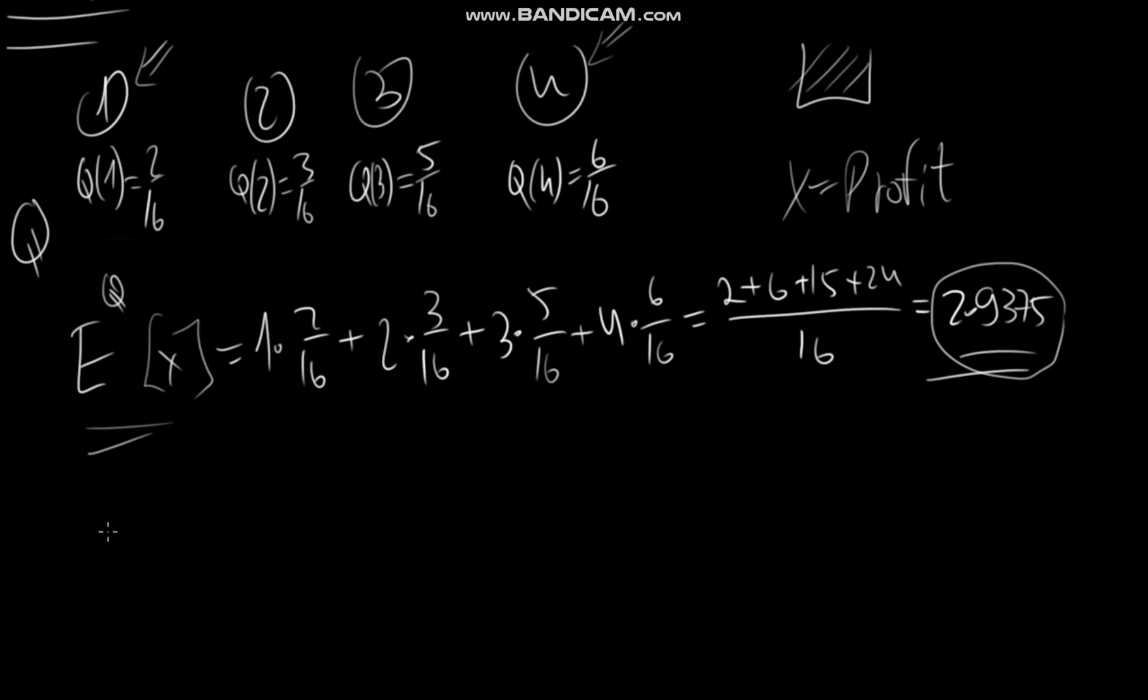All we are saying is if we want the expectation under the Q measure of X to be equal to the expectation under the P measure, all we have to do is multiply the first probability with something. And this something, this Z, is the Radon Nikodym derivative.